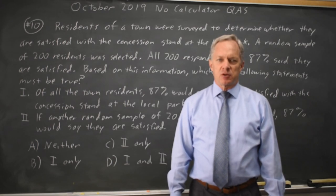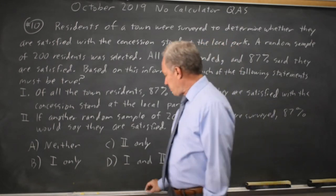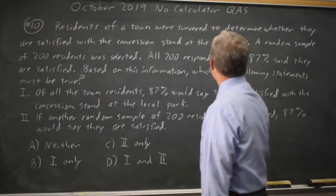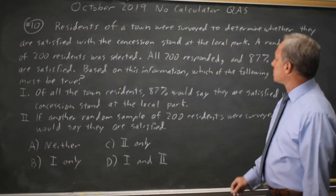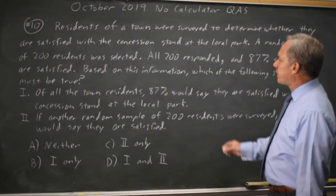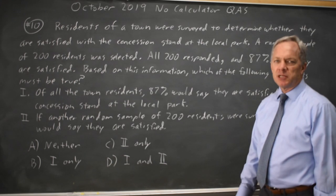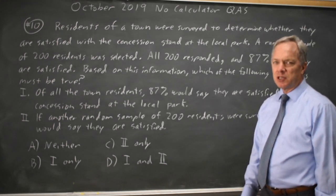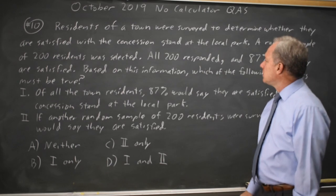This is calculator question number 10. The College Board is asking about a random survey. Residents of a town were surveyed and a random sample was selected, which means we should be able to generalize the results of the survey to all the residents of the town.